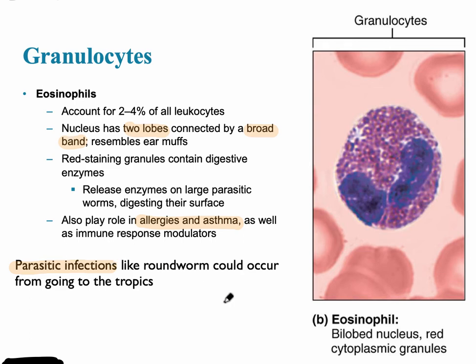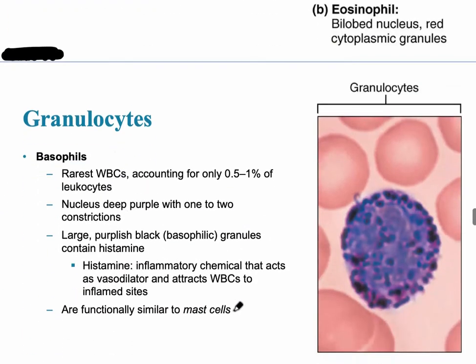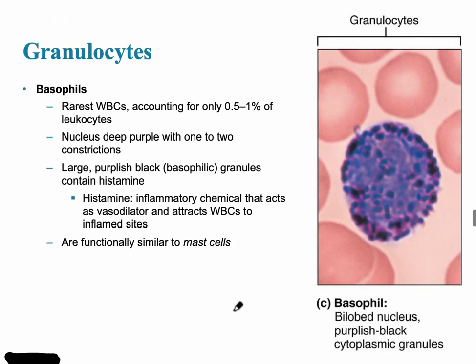The last type of granulocyte is the basophil, and it is the most rare of all leukocyte types. It has small granules that contain histamine. Histamine is a major chemical released when inflammation occurs in the body. Basophils are very similar in function to an immune cell called mast cells.